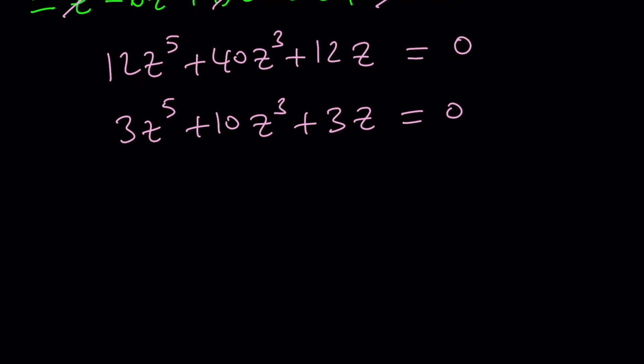Not only that we can also factor out a Z. 3Z to the fourth plus 10Z squared plus three. Now not only this is factorable but also the expression inside the parentheses is a bi-quadratic. It's quartic but by way of substitution let's go ahead and call this W. We can turn this into a quadratic.